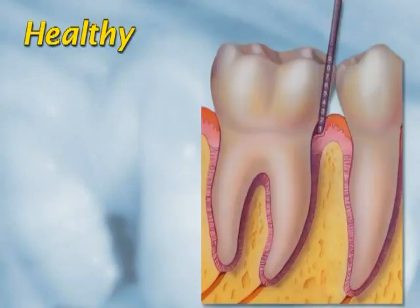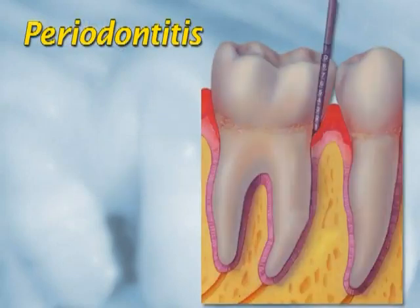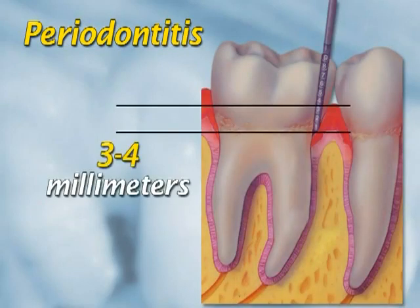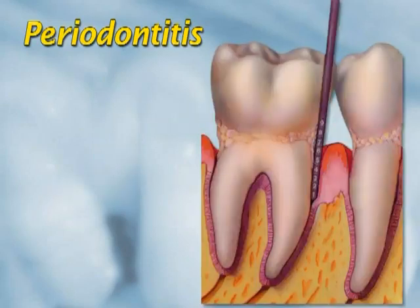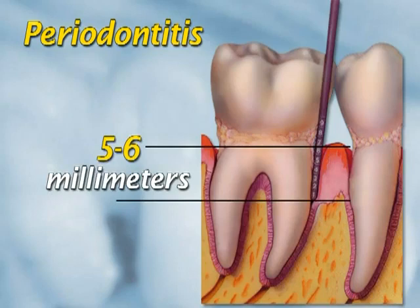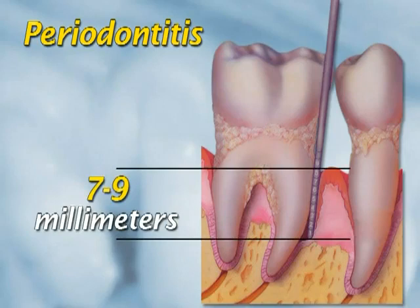Healthy gums adhere tightly to the tooth so that the probe penetrates only one to three millimeters. Diseased gums tend to swell and detach from the tooth, forming what are known as pockets. In advanced forms of periodontitis, pockets measuring four, five, six millimeters and up are cause for concern and require immediate attention — meaning that much of the soft tissue and bone anchoring the tooth in place has been lost.